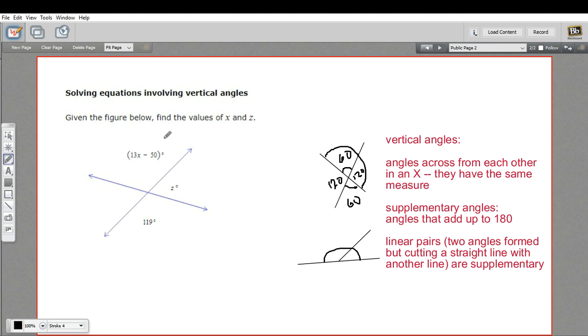So this is the information we're going to use to solve this figure here. First of all, I can find z because these two make a linear pair. So all I have to do is take 180 minus 119 to find the value of z. So that is going to be 61. So z equals 61 degrees.